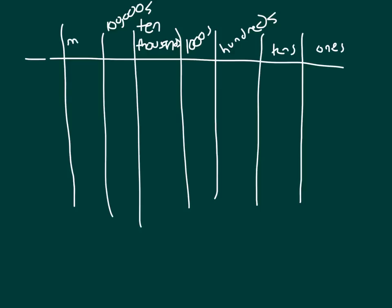And what would come next is the ten-millions place. So if you look at this again with me, we have: ones, tens, hundreds, thousands, ten-thousands, hundred-thousands, millions.